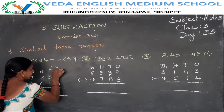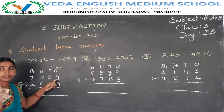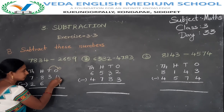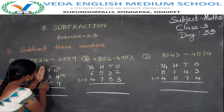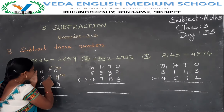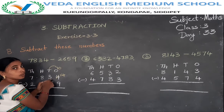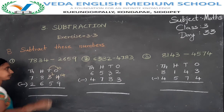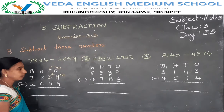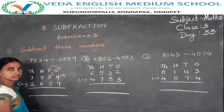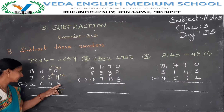Take the value from the tens place to the ones place. 10 plus 4 equals 14. So now the ones digit becomes 14. 14 minus 9 — how much? 14 minus 9 is 5. So the ones digit answer is 5.